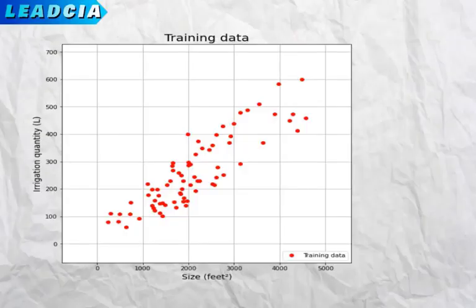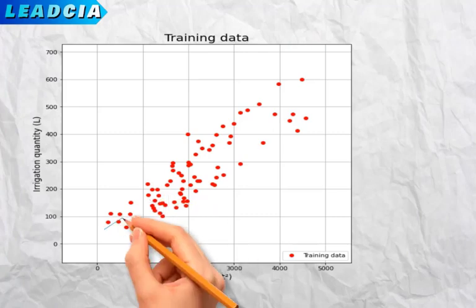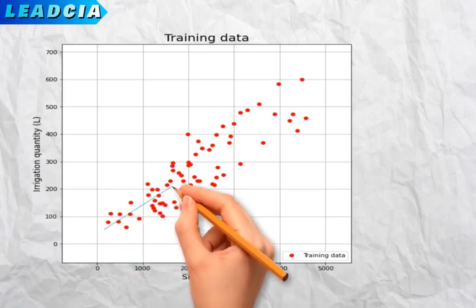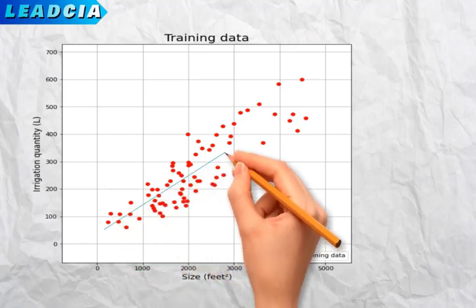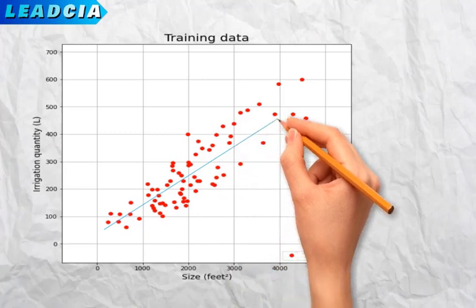Hi guys. In the previous video we talked about linear regression with one variable and we said that it consists in looking for a straight line that passes through the points representing the examples of the training database, in the case of our example the area of the garden and the amount of water irrigation of this garden as coordinates.